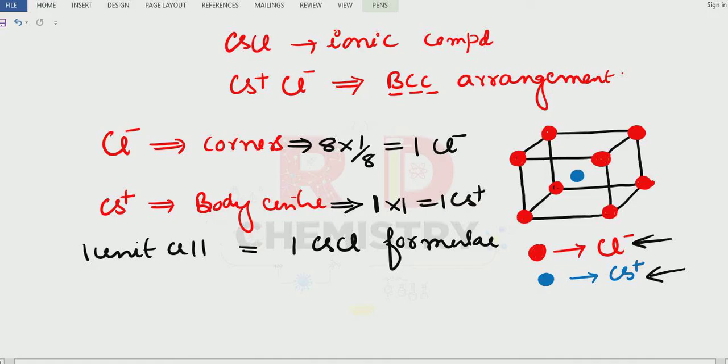So I write it like this. Cesium one in number, chloride is one in number. Therefore it becomes CsCl. The formula.